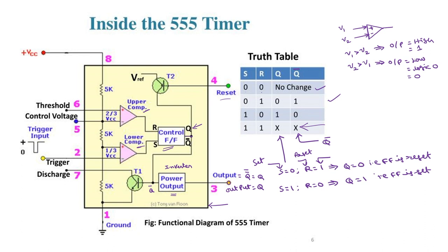Coming to the operation of this 555 timer: we have 2 comparators. The upper comparator has a threshold voltage of 2/3 VCC, and the lower comparator has 1/3 VCC.